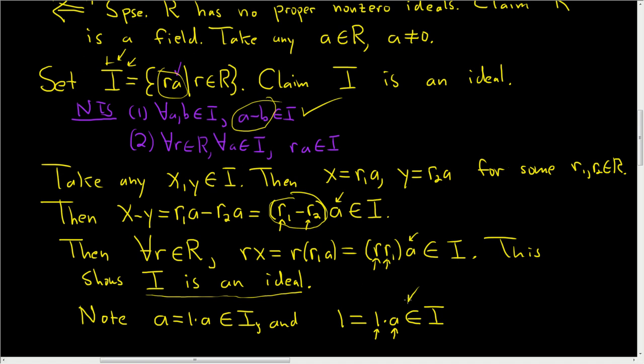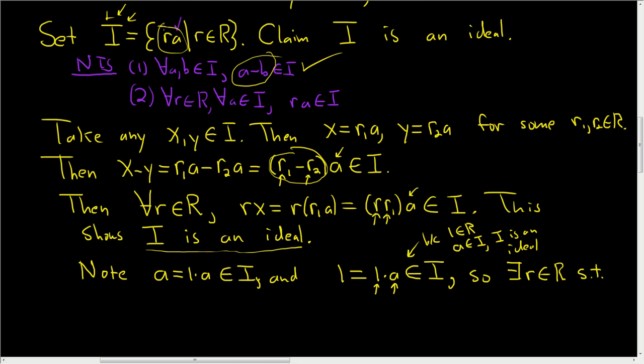And we've shown that I is an ideal, right? So this means that this product is in I. And this is because 1 is in R, A is in I, and I is an ideal. That's the key step. And since 1 is in I, there exists some R in R such that 1 can be written as RA. So 1 equals RA.